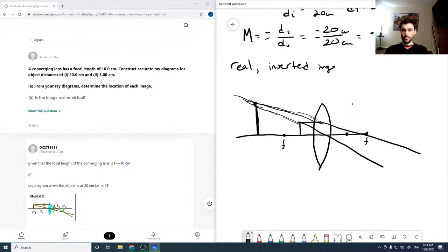And so this is going to be a virtual image, which is not inverted. And it's also magnified, right? So if we run through our equations here.